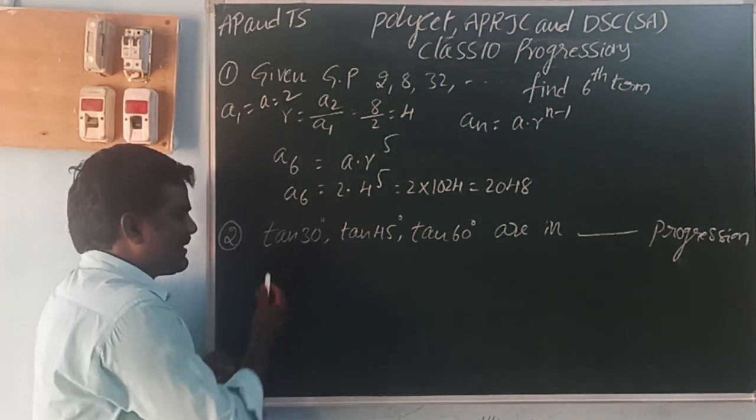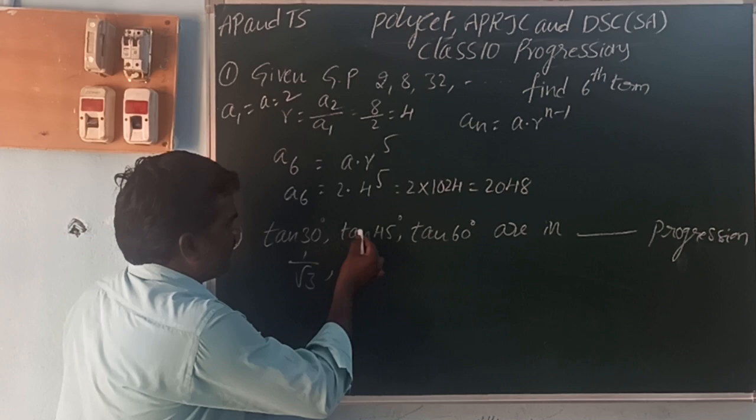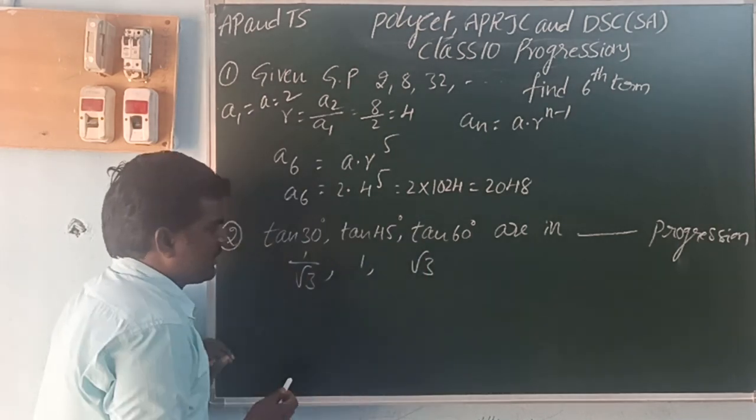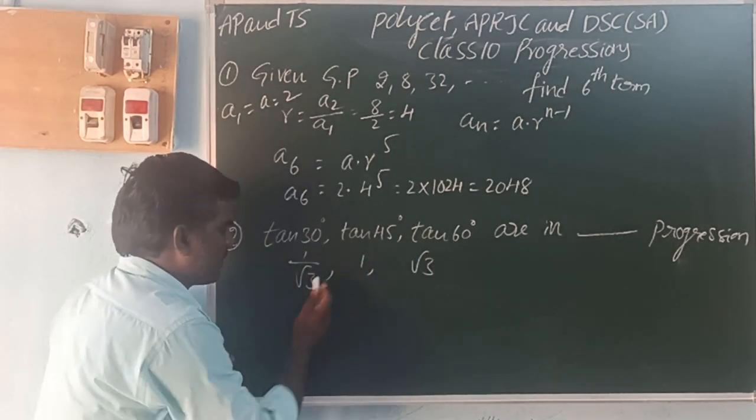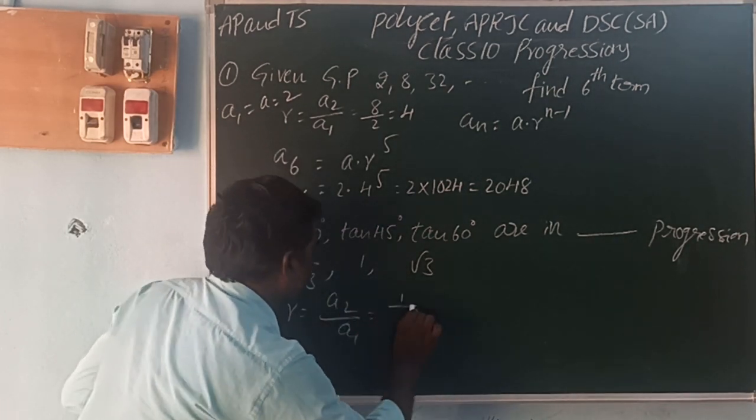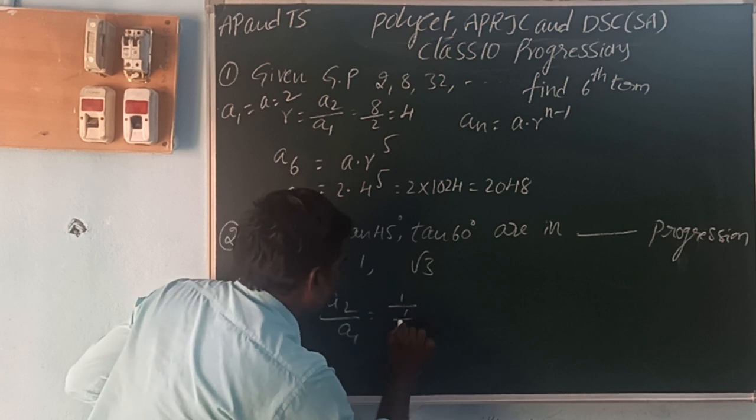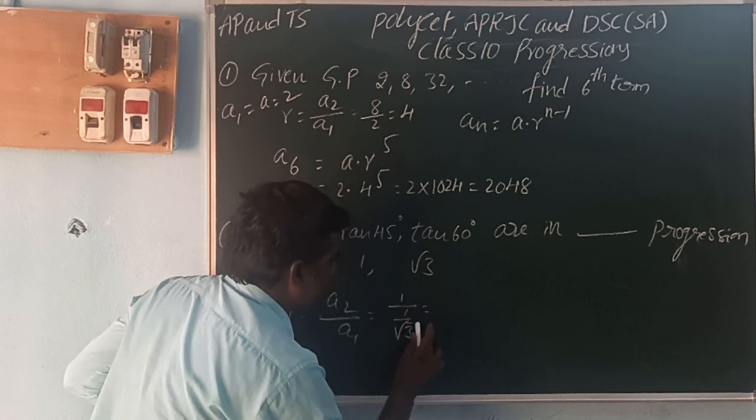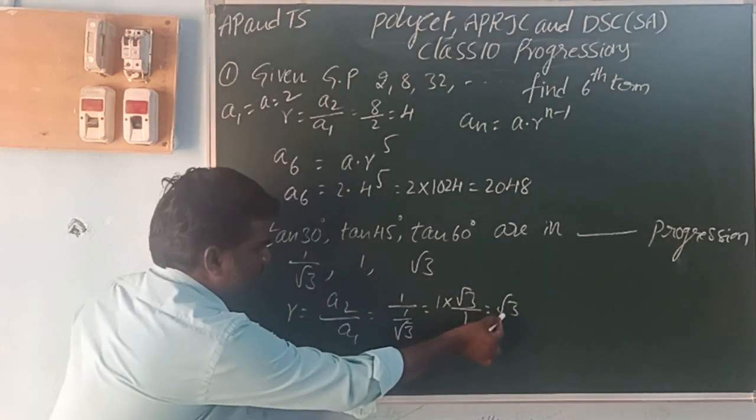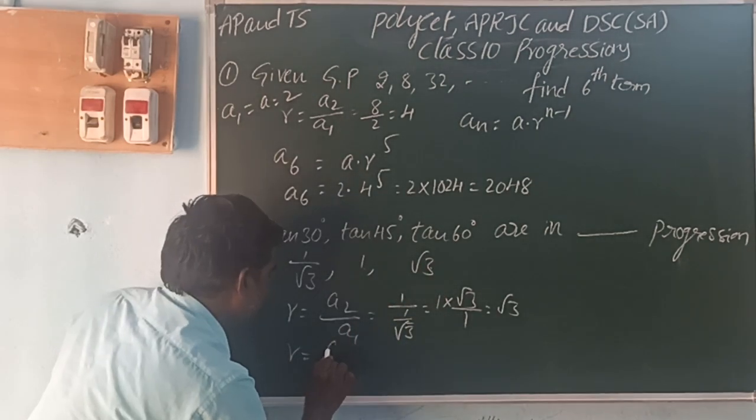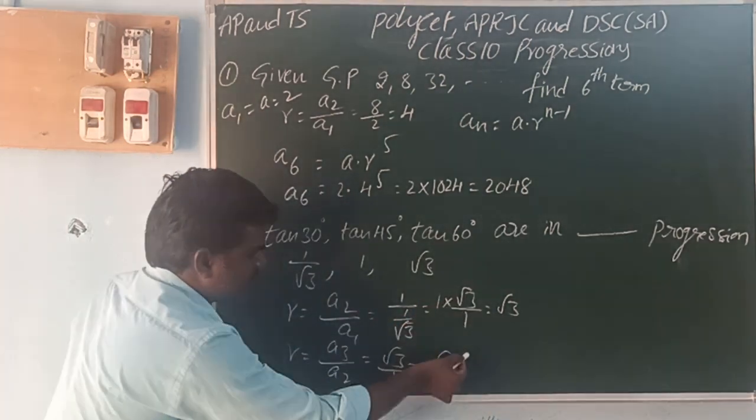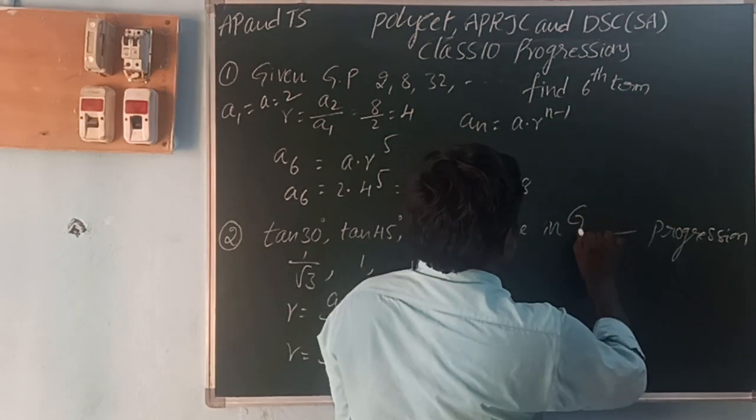Next, tan 30°, tan 45°, tan 60° - are they in arithmetic progression? Tan 30° value is 1 by root 3, tan 45° is 1, tan 60° is root 3. A3 by A2, that is root 3 by 1 equals root 3. Common difference is changing, so not in arithmetic progression. It's not in geometric progression either.